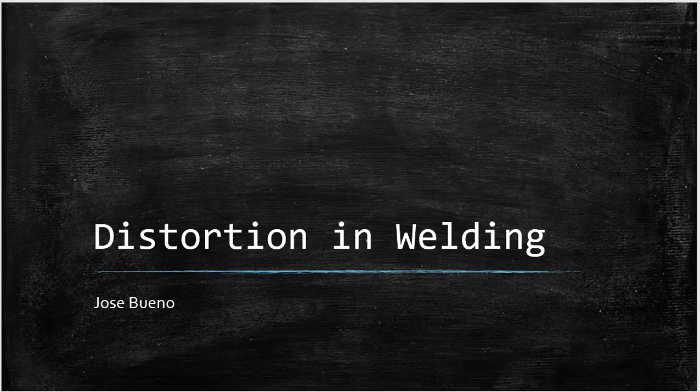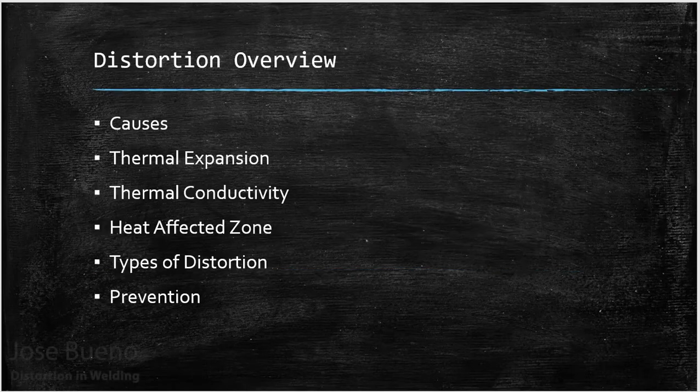Hey everyone, welcome to another video. We're going to be talking about distortion and there's a lot of things we're going to cover. Here's a quick overview: we're going to talk about the types of things that can cause distortion, cover some new terms — thermal expansion, thermal conductivity, the heat affected zone — and then the various types of distortion and how to prevent it.